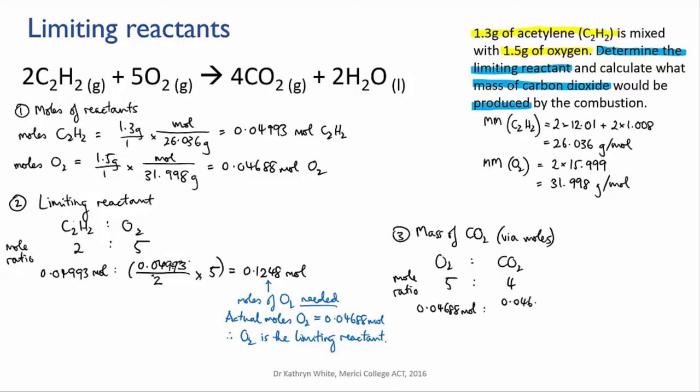So I take the amount of oxygen and I divide by 5 and multiply by 4 to find out how many moles of carbon dioxide are produced. And this gives me 0.03750 moles of carbon dioxide.